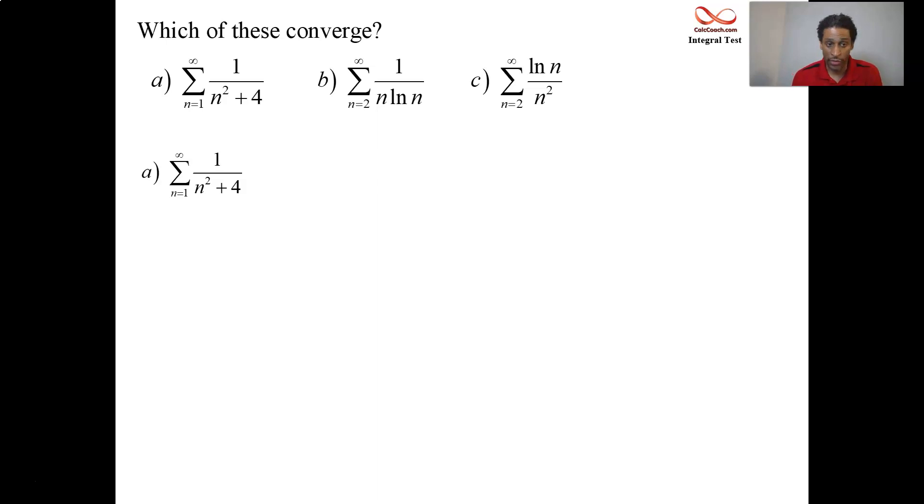So what do we do with the integral test? We replace all the n's with x's. We have this function, 1 over x squared plus 4. And that function is continuous and positive, and it's decreasing as well. We're interested in the interval from 1 to infinity because that matches the series.